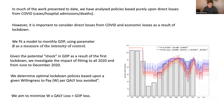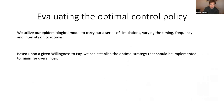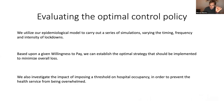We then look at optimizing lockdown policies based on a given willingness to pay — how much money are you willing to spend per quality-adjusted life year (QALY) loss avoided. What we minimize is willingness-to-pay times the quality loss plus the GDP loss, giving a combined measure of health and economic harm. We vary the timing, frequency, and intensity of circuit breaker lockdowns across simulations. We also impose a threshold on hospital occupancy to ensure optimal policies don't place unreasonable pressure on the NHS.